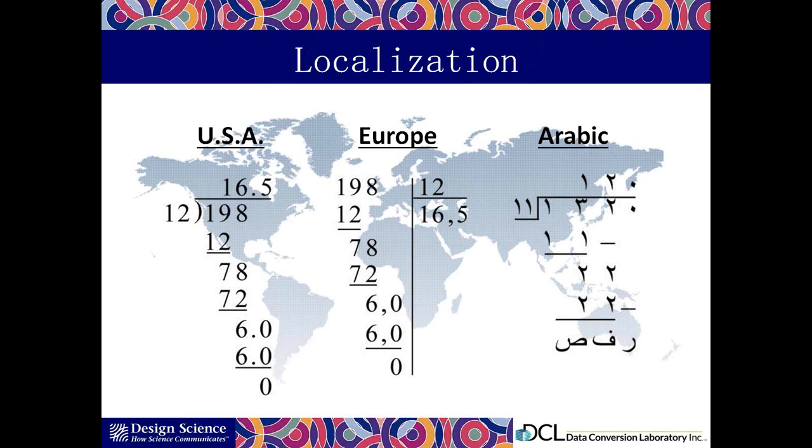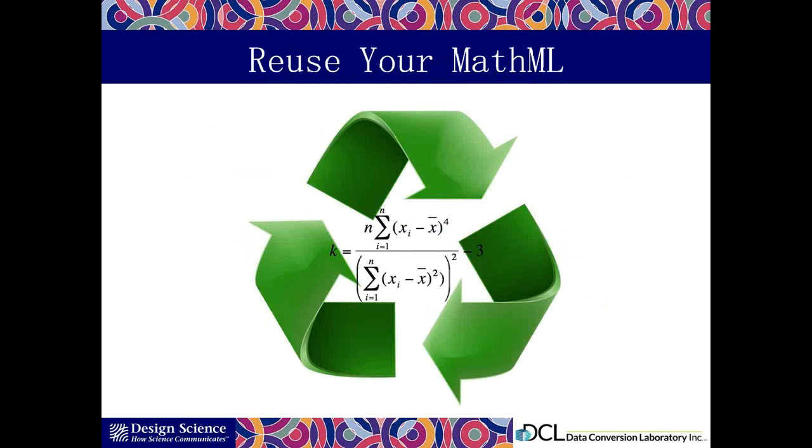Another example is if you're publishing to many languages and many formats, that can become a big task. Something as simple as five languages and three delivery formats means you need to decide whether or not to manually recreate 15 equations for each one that shows up in your documents. And it's not hard to imagine that your document doesn't need a lot of math in it in order for that to become a big job really fast.